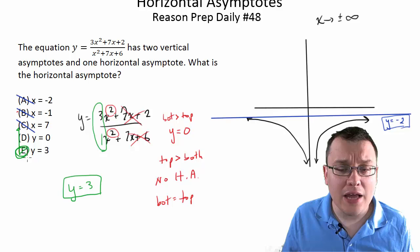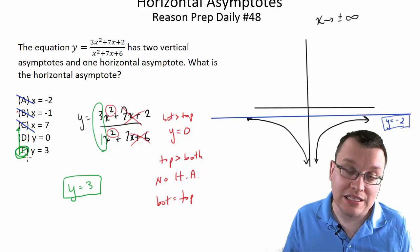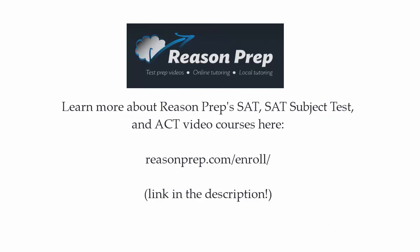So as you can see, not too bad once you remember or once you know the trick for finding horizontal asymptotes. To learn more about ReasonPrep's SAT, SAT Subject Test, and ACT video courses, go to reasonprep.com slash enroll. And you can find the link in the description below the video.